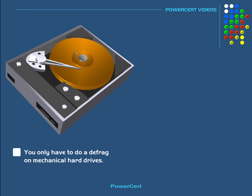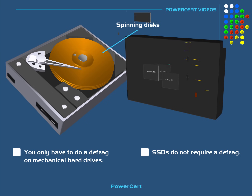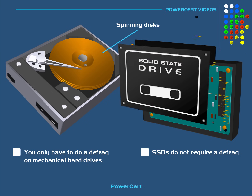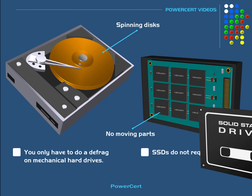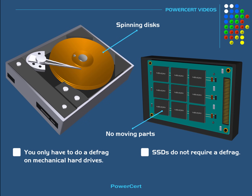You only have to do a defrag on mechanical hard drives, because mechanical hard drives have disks that spin so that the heads can read and write data files. Solid state drives, or SSDs, do not require doing a defrag because SSDs have no moving parts. The computer can just pick and choose whatever file it needs regardless of which memory chip the file is located on.